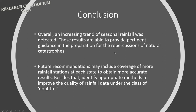Future recommendations include expanding coverage to more rainfall stations at each state to obtain more accurate results. Currently there is mostly only one station per state, and if a state is very large in area, the accuracy of the trend analysis may not provide adequate coverage. Additionally, identifying appropriate methods to improve the quality of rainfall data classified as doubtful would be beneficial. A significant percentage of data falls in the doubtful category, and if that data could be utilized with appropriate measures, it would improve accuracy and coverage.